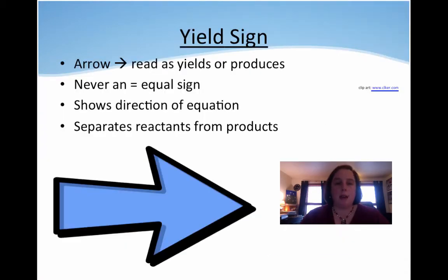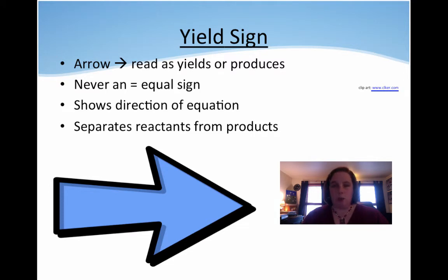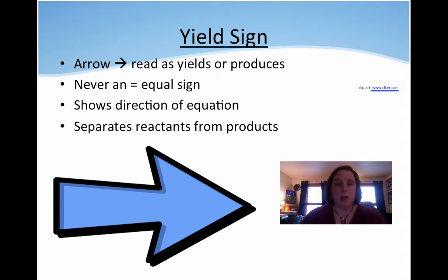The yield sign or arrow is how we produce or change something. We never, never, never use an equal sign, because two things don't equal each other — you're having a chemical reaction change. A chemical reaction gives you something new. The yield sign always shows the direction of the equation and always separates the reactants from the products. It always goes to the right.